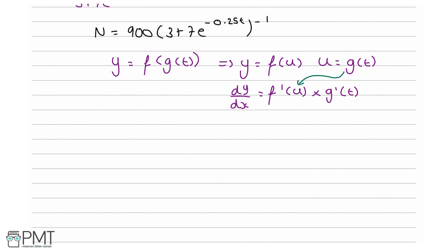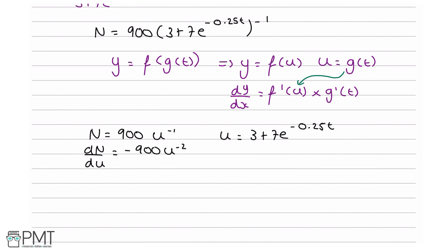Let n equals 900u to the minus 1, and u equals 3 plus 7e to the minus 0.25t. Then dn by du equals minus 900u to the minus 2. For du by dt: 3 differentiates to 0, and 7e to the minus 0.25t differentiates to minus 0.25 times 7 times e to the minus 0.25t.